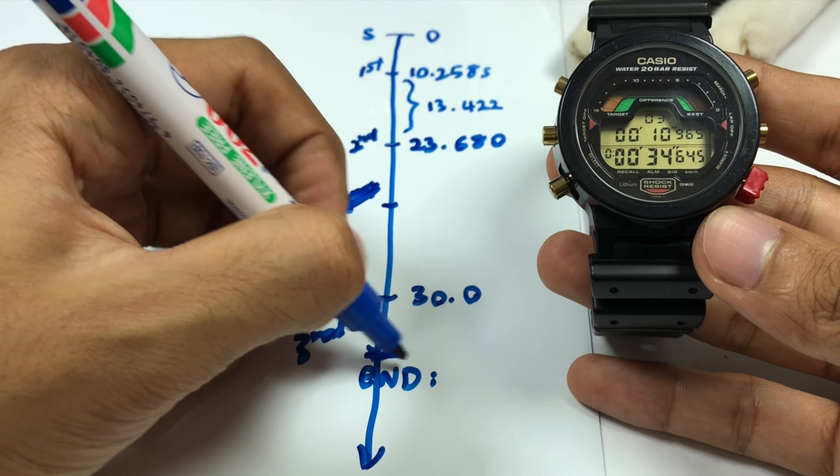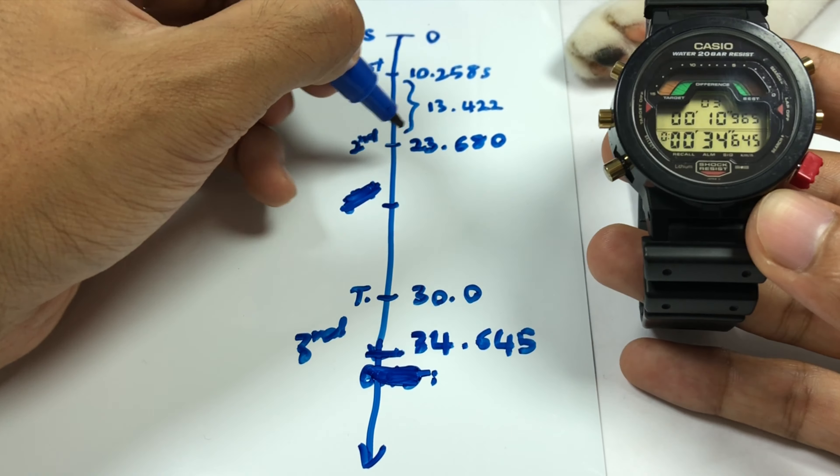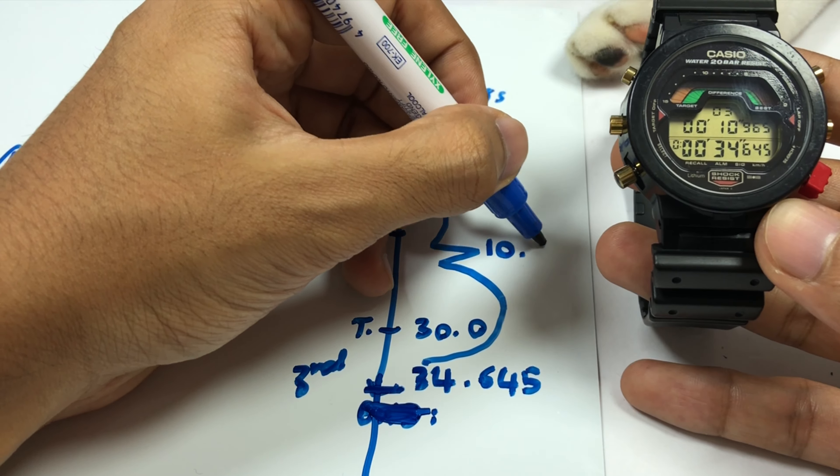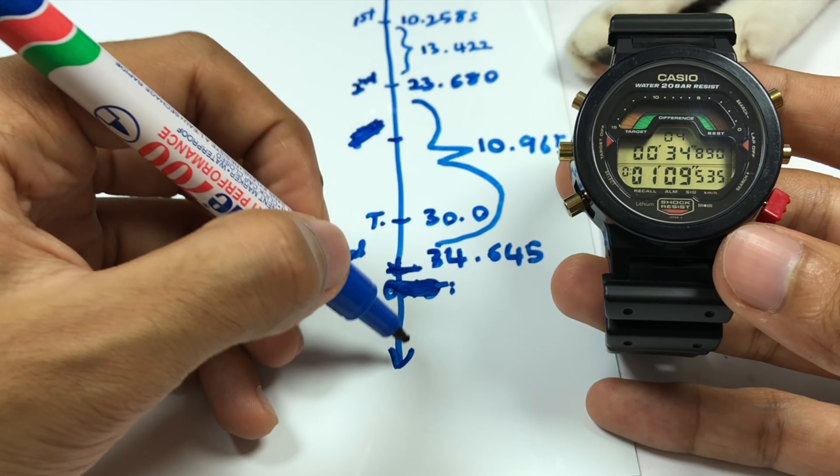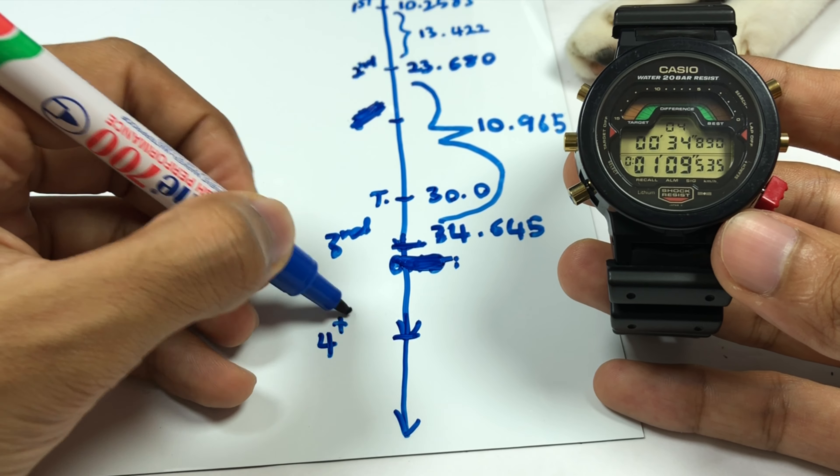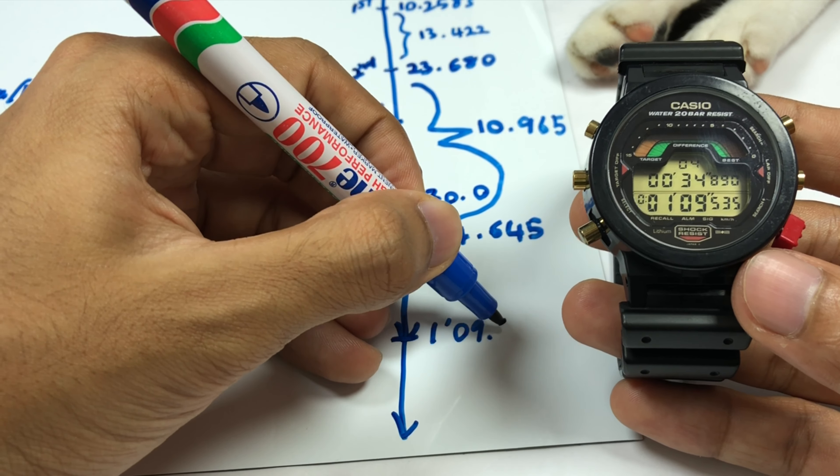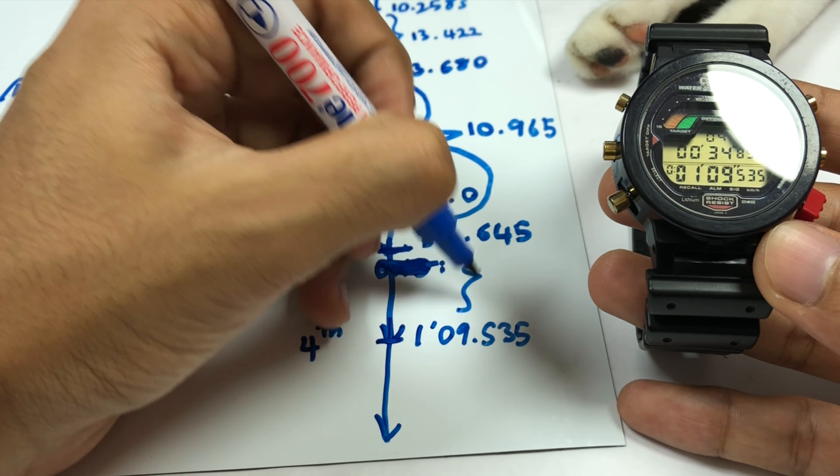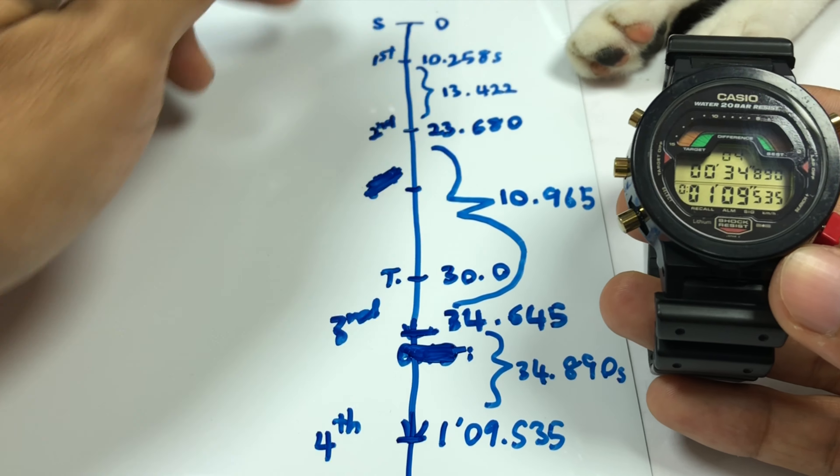Third lap is at 34.645. The time gap between here and here is 10.965 seconds. The fourth lap is at one minute 9.535 seconds. The time gap between these two is 34.890 seconds. So you get the idea, this is how it goes.